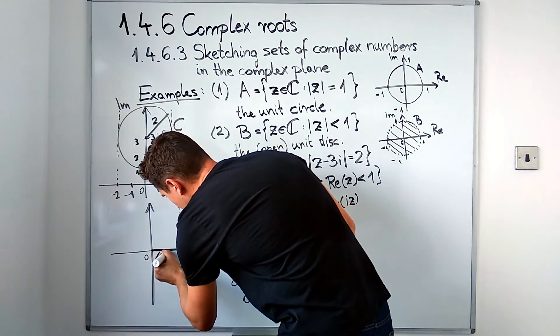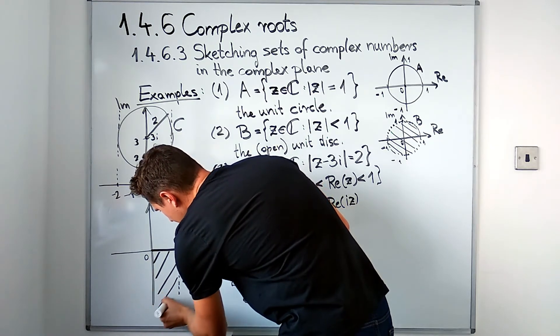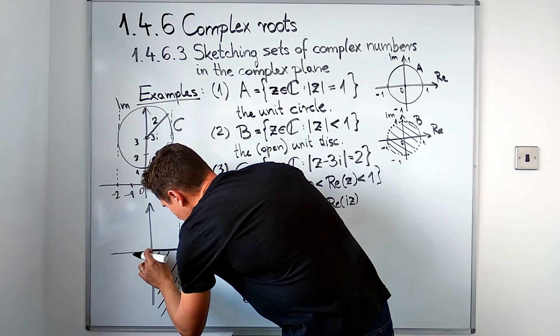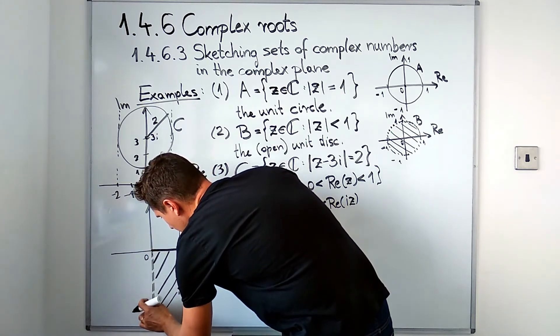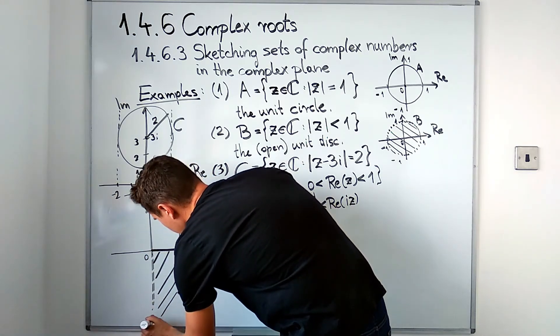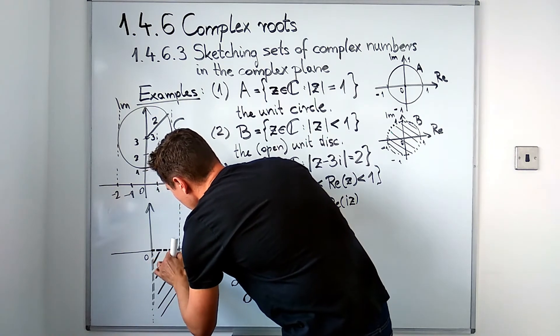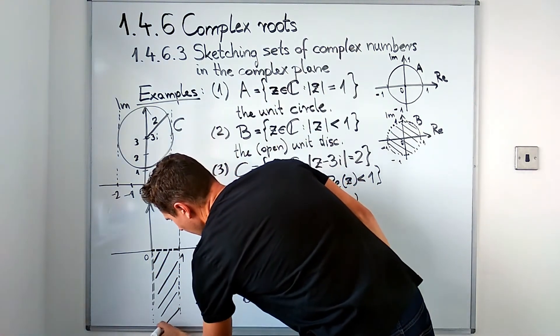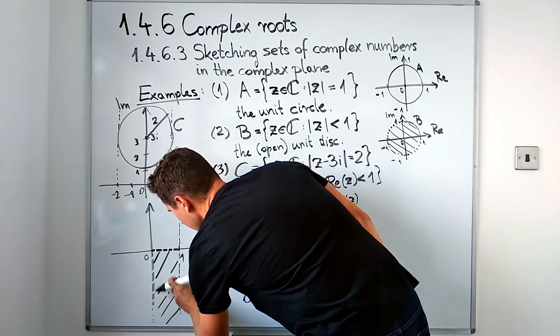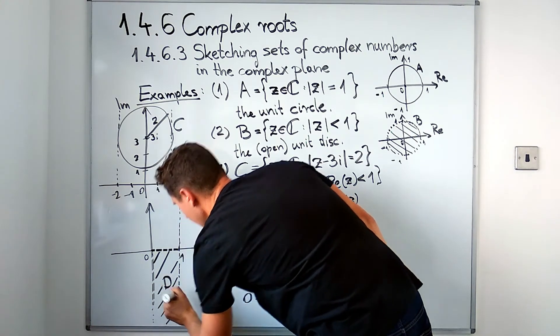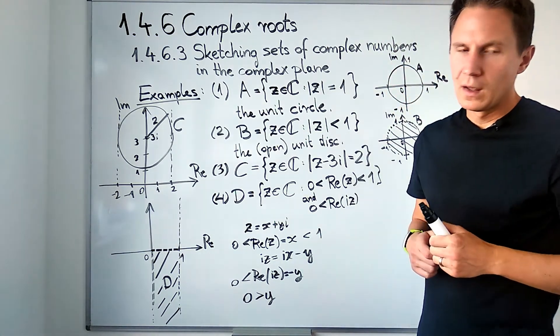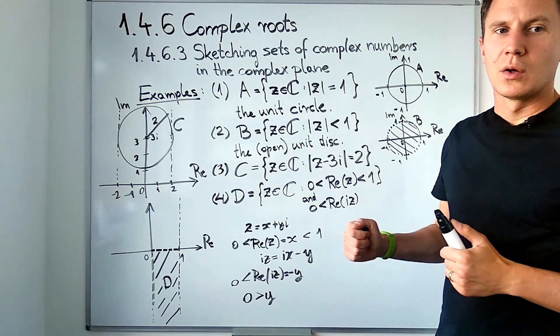We are looking at points which have negative vertical coordinates, meaning we are going below the real axis. Combining these two inequalities means that we are looking at points in this half strip with the boundary not being included. Boundary is not included because we have strict inequalities. This is the set D.